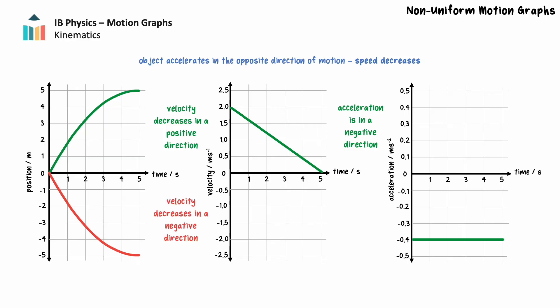We see similar graphs when an object moving in a negative direction accelerates in a positive direction. The position time graph gets less steep over time in a negative direction, so the velocity is becoming steadily less negative, representing a decrease in its magnitude, and the acceleration is constant in a positive direction.